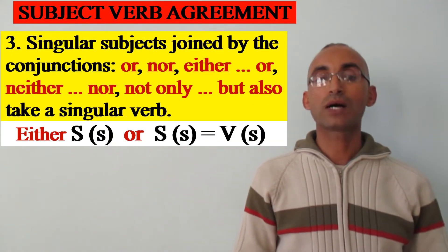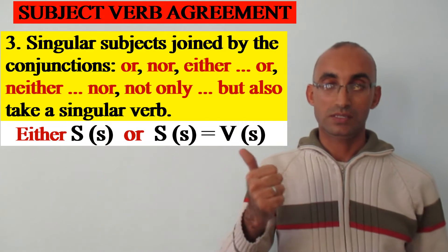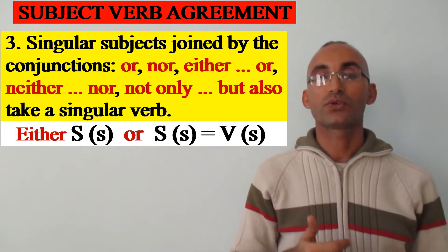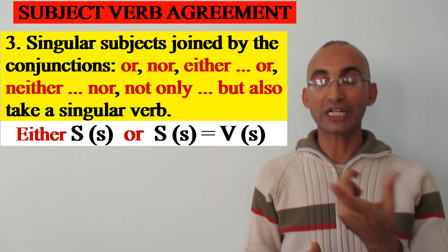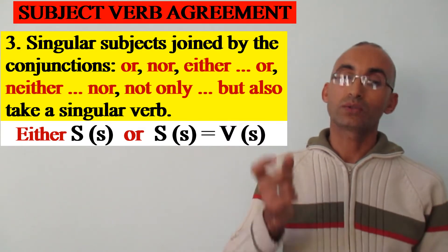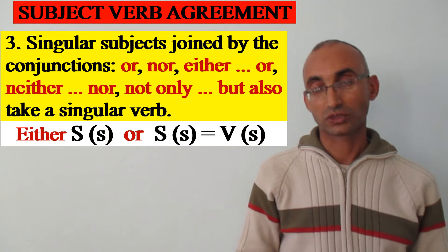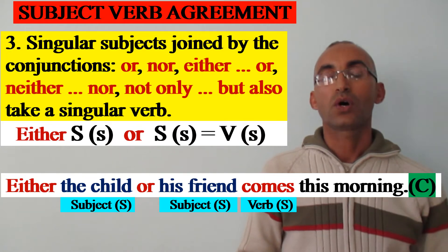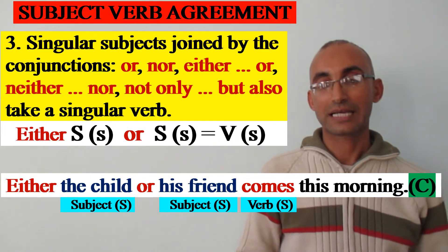Rule number three is about singular subjects joined by 'or,' 'nor,' 'either...or,' 'neither...nor,' or 'not only...but also.' When these conjunctions join two or more singular subjects, they take a singular verb. For example: 'Either the child or his friend comes this morning.' The verb 'comes' is singular because both subjects are singular.